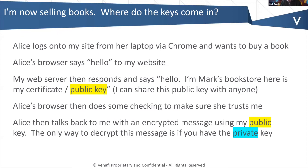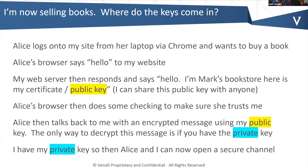Assuming everything checks out, Alice is going to take that public key and encrypt a message, then send it back to me. The only way I can decrypt that message is if I have my private key, because she took the public key I gave her and sent me an encrypted message. I will then use my private key to decrypt that message. And because I'm the only one who has that private key, Alice and I will open up a secure channel — it's called a session key — and then Alice can securely buy books and give me her credit card, knowing everything in that transaction is encrypted.